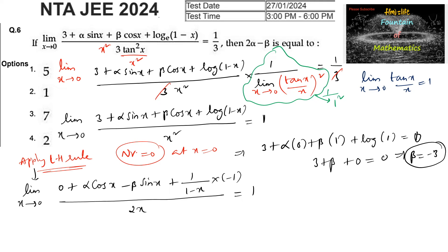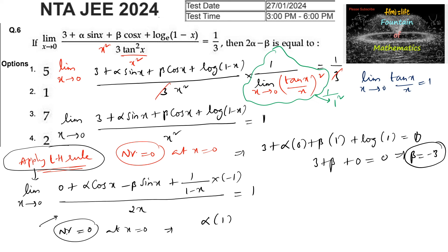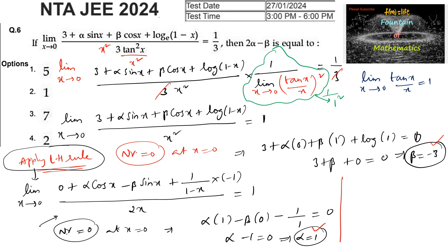The denominator is still 0 at x = 0, so the numerator must also equal 0 at x = 0. That gives: α·cos(0) - β·sin(0) - 1/(1 - 0) = 0, which simplifies to α - 1 = 0, so α = 1. With α = 1 and β = -3, we get 2α - β = 2(1) - (-3) = 2 + 3 = 5. The answer is 5, which is Option 1.